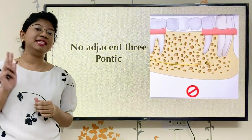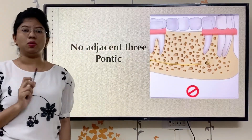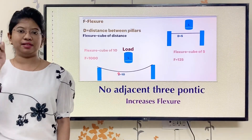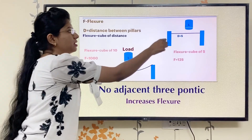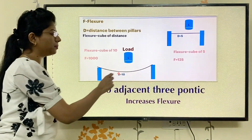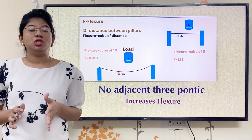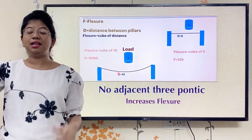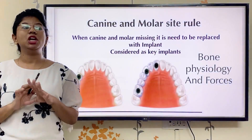The second rule is no adjacent three pontic — this is not allowed. As I explained in my previous video about the concept of flexure, when the distance between supports is 5 mm and that distance is increased, flexure increases exponentially. So when you give three adjacent pontics in an implant case, your flexure will increase exponentially because the distance between supports has increased, which we don't want.